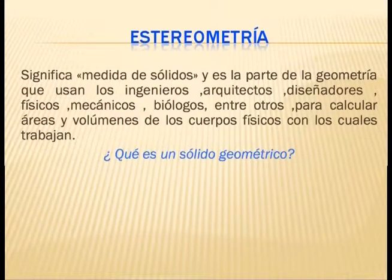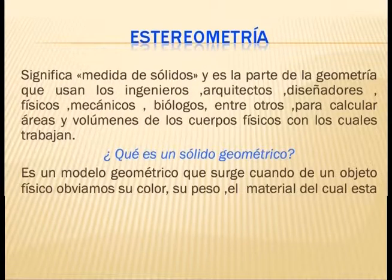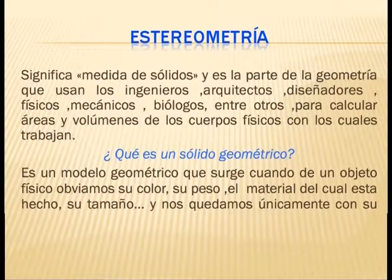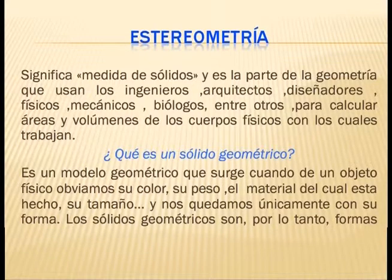¿Qué es un sólido geométrico? Es un modelo geométrico que surge cuando de un objeto físico obviamos su color, su peso, el material del cual está hecho y su tamaño, y nos quedamos únicamente con su forma. Los sólidos geométricos son, por lo tanto, formas abstraídas de los objetos físicos o mentales.